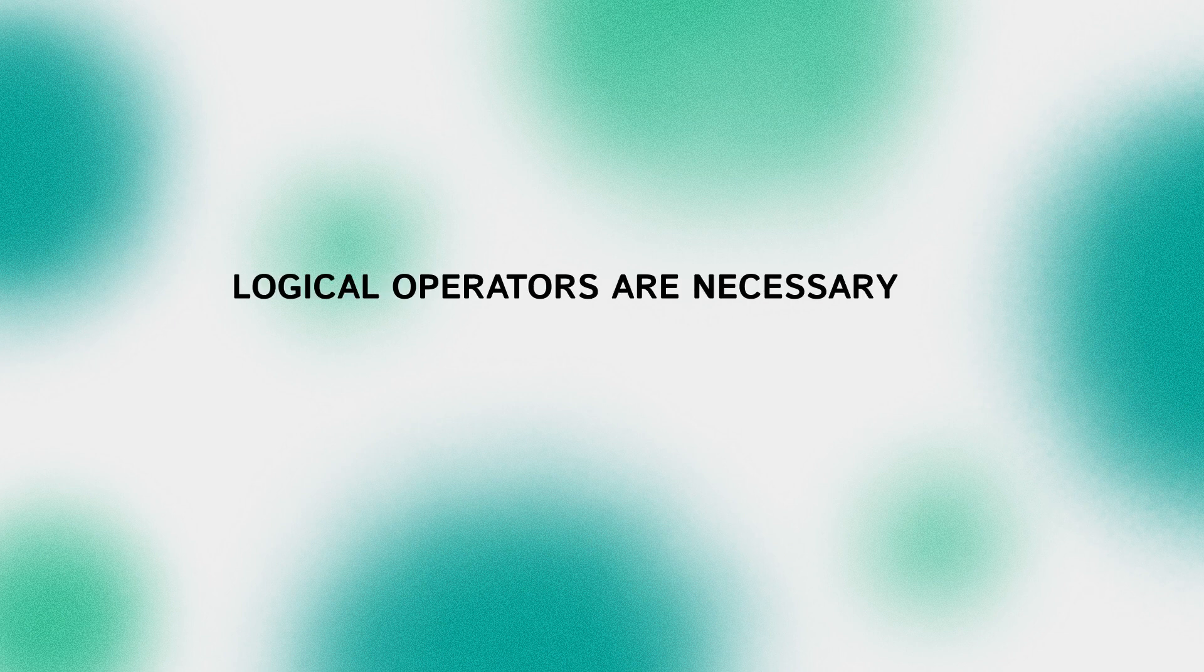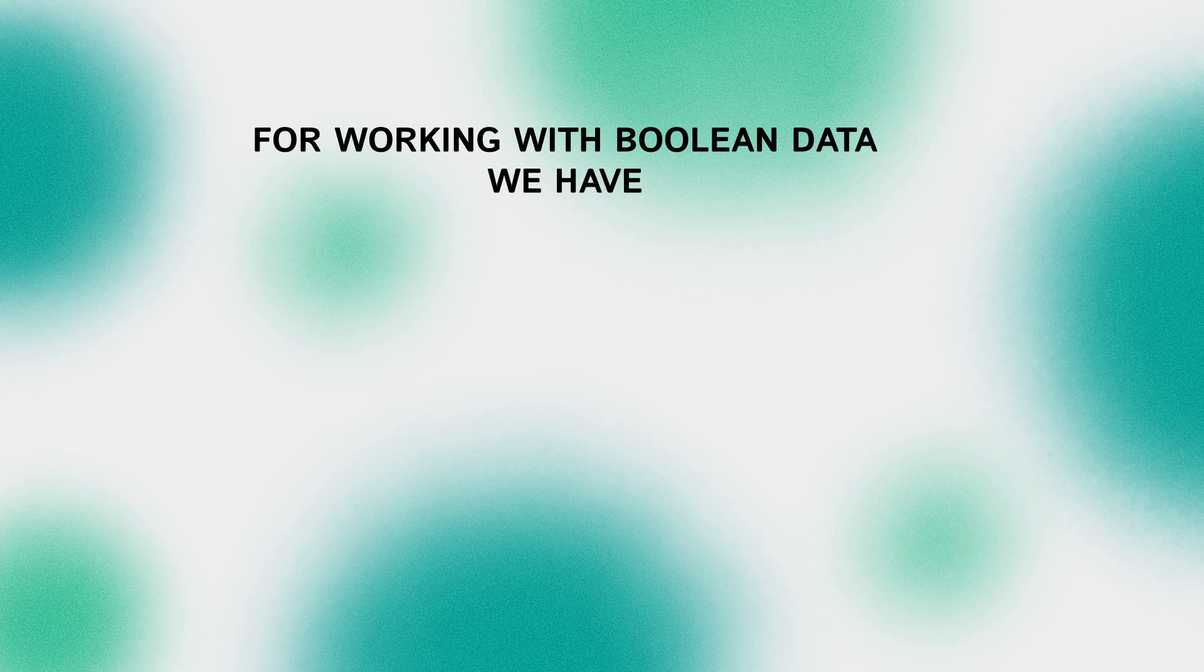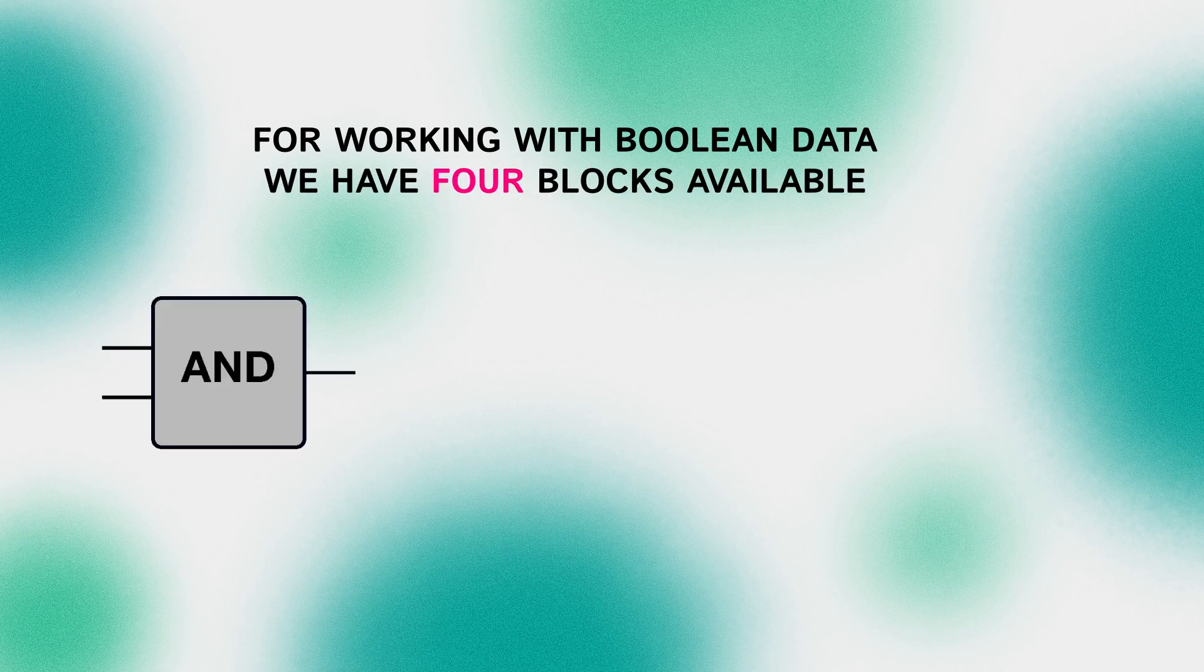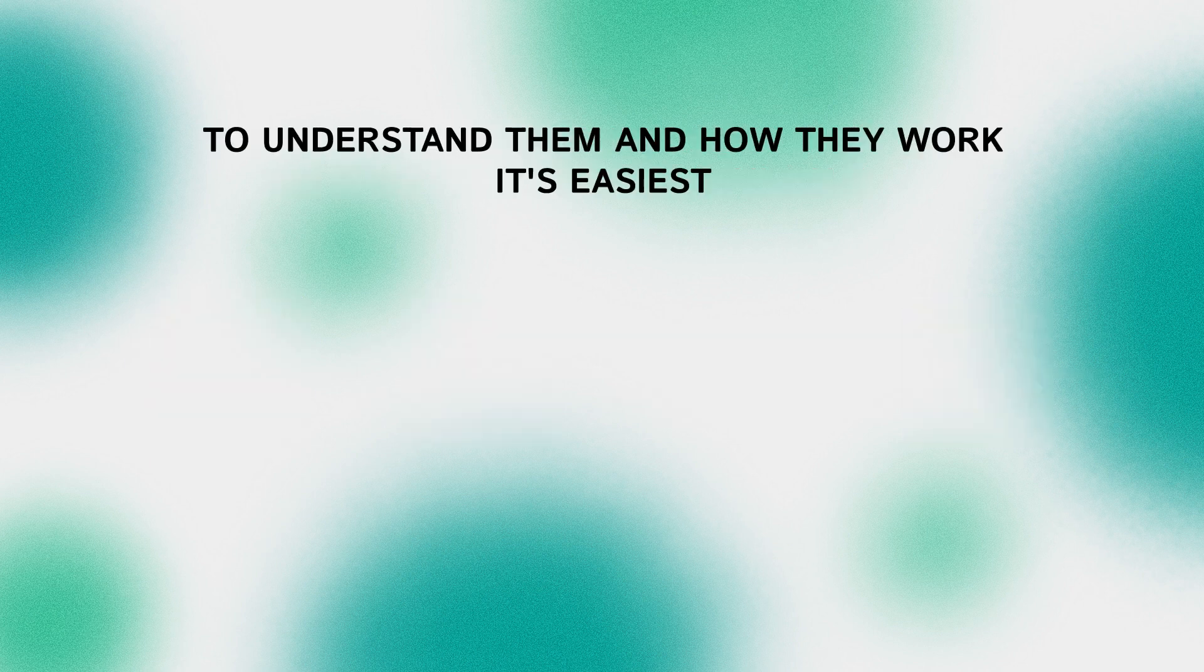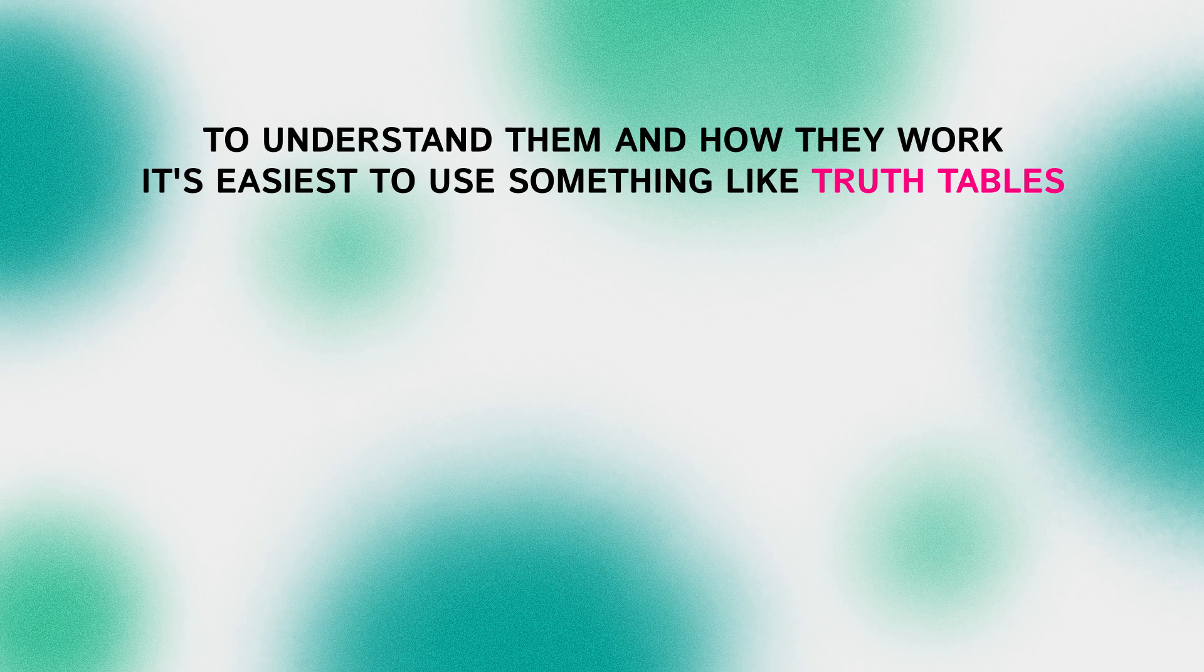Logical operators are necessary for logical calculations, which is quite logical. For working with boolean data we have 4 blocks available: AND, OR, NOT and XOR. To understand them and how they work, it's easiest to use something like truth tables.